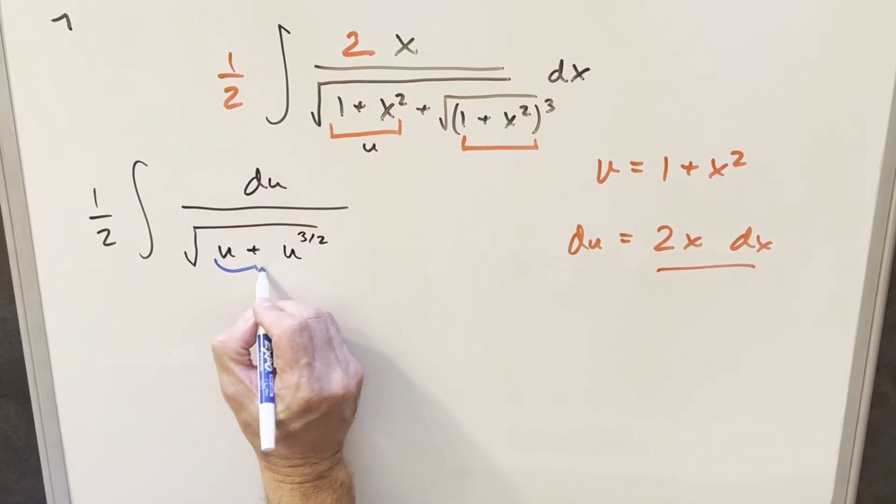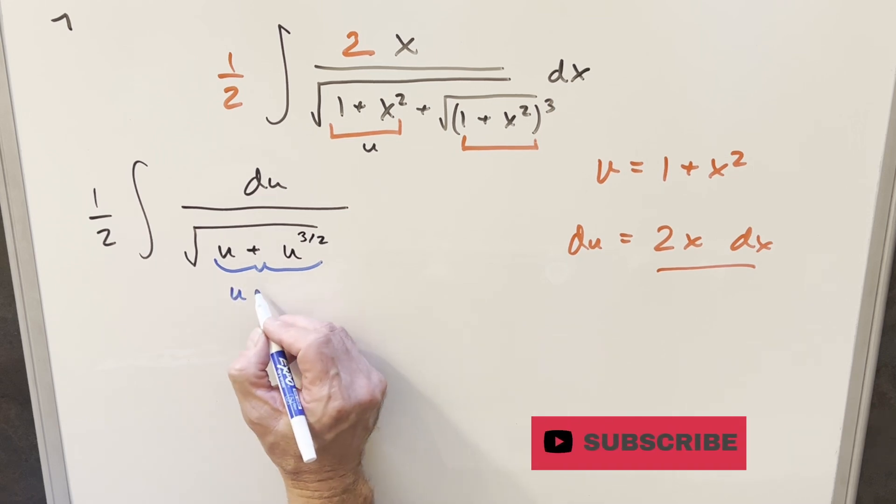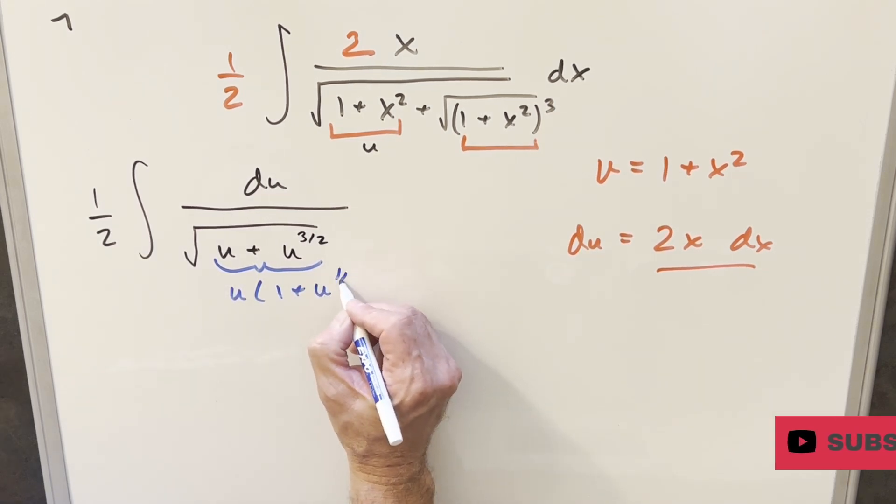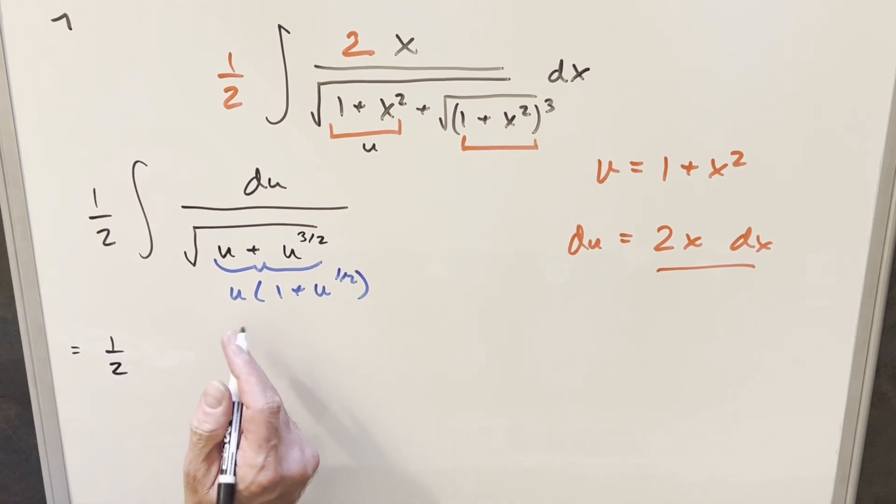Then here, I can actually just factor this. If I factor a u out, this is going to become u times 1 plus u to the 1 half. So we'll rewrite this, and what we can do is, the u inside the square root, we'll take it out of the square root, it becomes u to the 1 half.